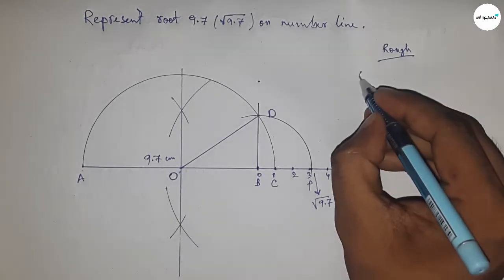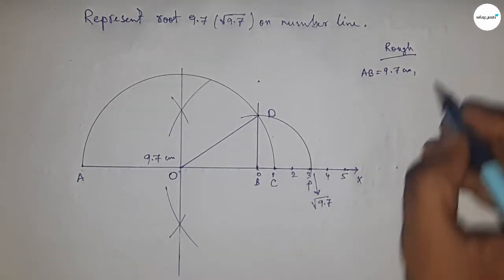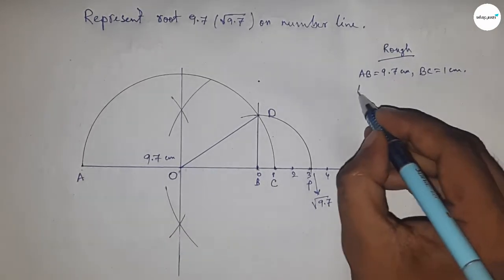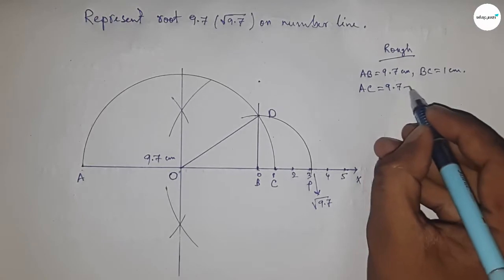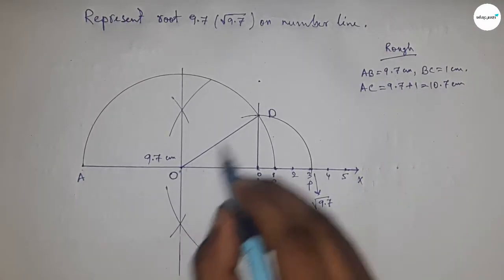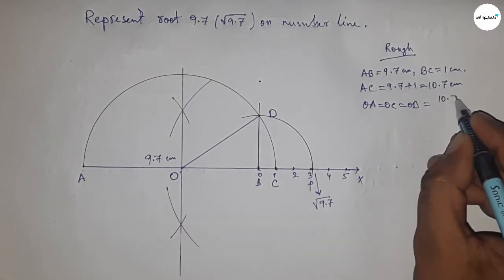Now let's discuss the calculation. Given: AB equals 9.7 centimeters and BC equals 1 centimeter, so AC equals 9.7 plus 1, which is 10.7 centimeters. The radius OA, OC, and OD all equal 10.7 divided by 2 centimeters.